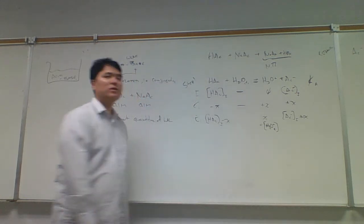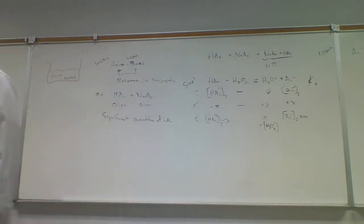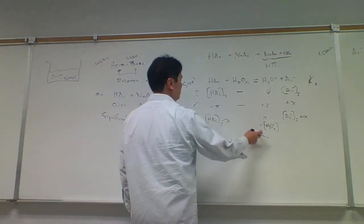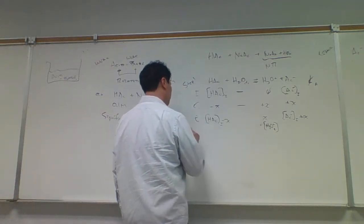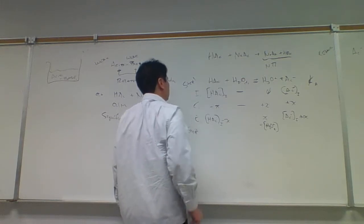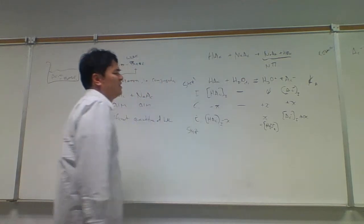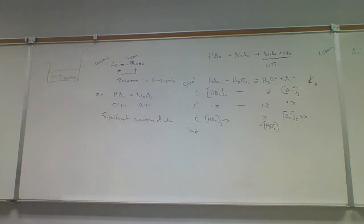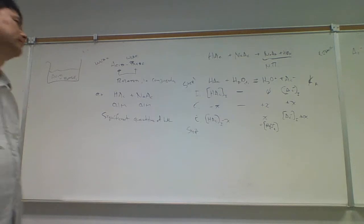Continuing on, we're going to hydrolyze some of the acetic acid with water, producing some hydronium and some acetate. At the end of step one, I'll have my initial acetic acid minus x from hydrolysis, then x for hydronium, and then the initial acetate plus x. This x is the hydronium ion concentration at the end of step one, but we have to add to this the hydronium from step two.